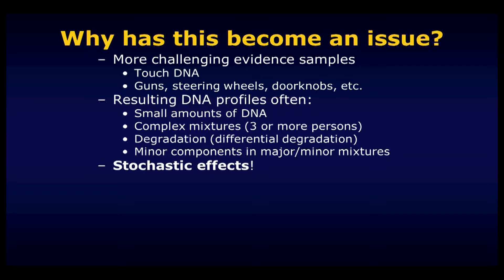We're seeing test results increasingly from things like the grips of guns, the trigger of a gun, the steering wheel of a car, doorknobs, and things of that nature. What we see when DNA profiles get generated from those very marginal samples — where there's small amounts of template DNA available — is that these samples appear to be mixtures. It's no longer a single source sample or a two-person mixture, but a very complicated mixture containing DNA from three or more individuals. The samples often show signs of degradation, and it's often very difficult to discern contributions from minor versus major contributors. In a word, these tests are dominated by stochastic effects.